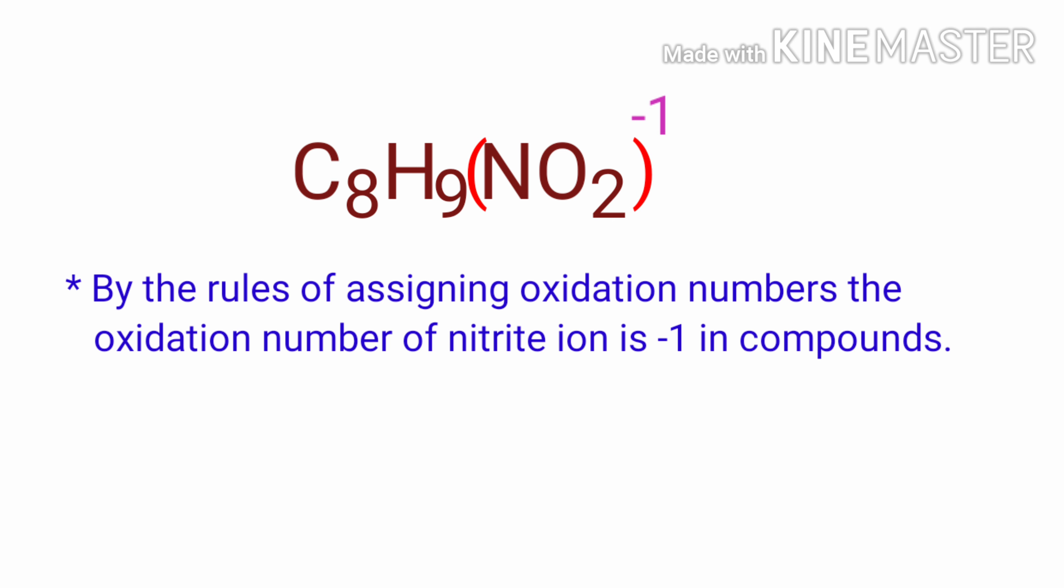Since oxygen has oxidation number of minus two and nitrogen has oxidation number of plus three, we can write the oxidation number of the element above its symbol and the total number of oxidation number of atoms below its symbol.